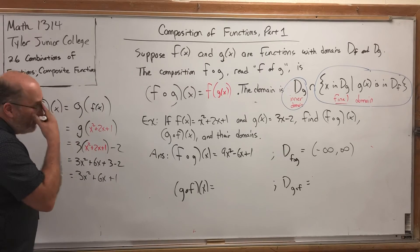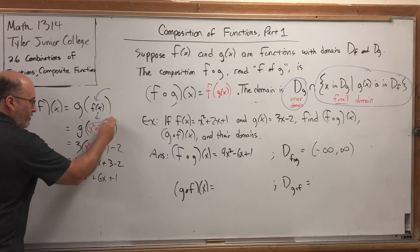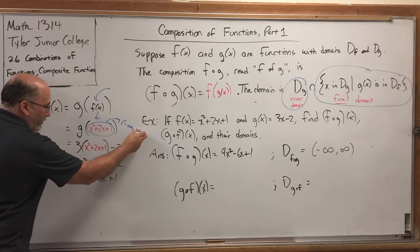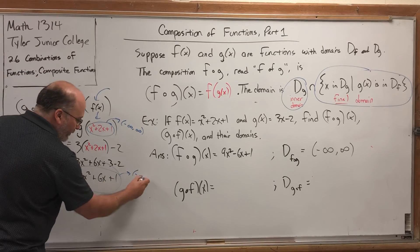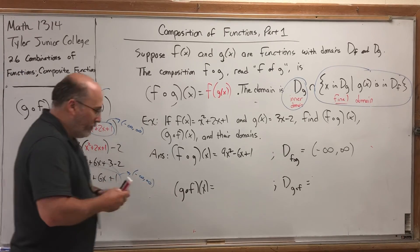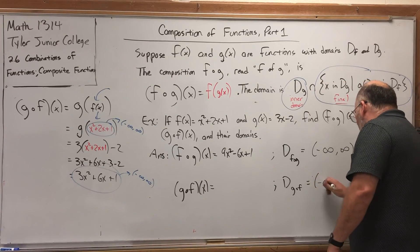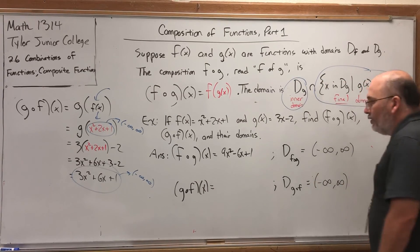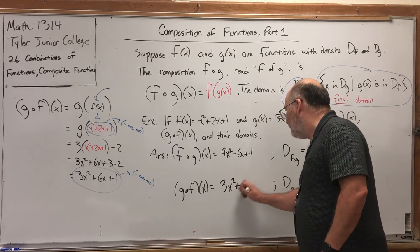So what's the domain of this composite function? Well, you look at the inner domain. So the inner domain was the f, but that domain is negative infinity to infinity. And you look at the final domain, which is also negative infinity to infinity. So again, not a real shocker. The domain of the composition of these two polynomial functions is all real numbers. And the composition in the other order was 3x² + 6x + 1.